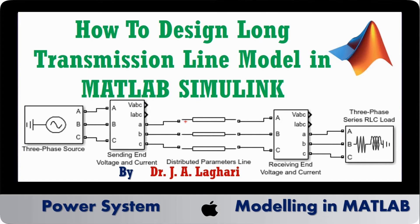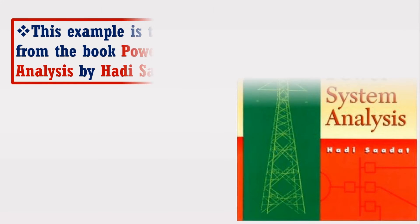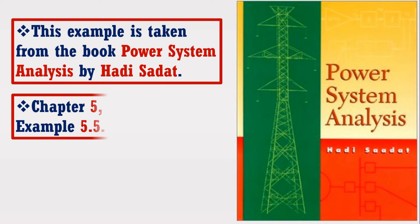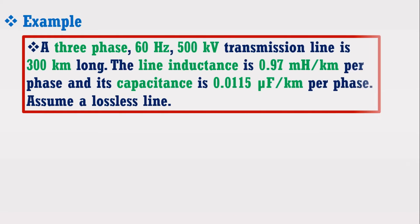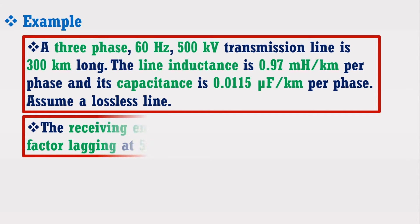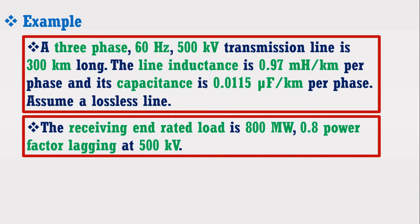For this purpose, I have taken an example from the book Power System Analysis by Hadi Sadat, Chapter 5, Example 5.5. According to this example, a 3-phase, 60 Hz, 500 kV transmission line is 300 km long. The line inductance is 0.97 mH per km per phase and its capacitance is 0.0115 µF per km per phase.